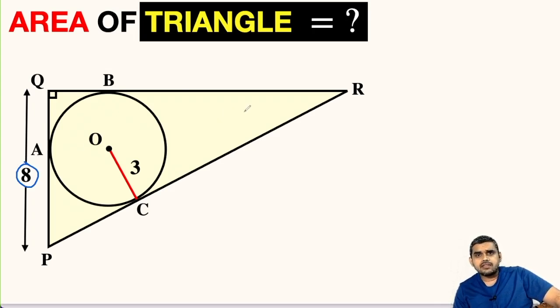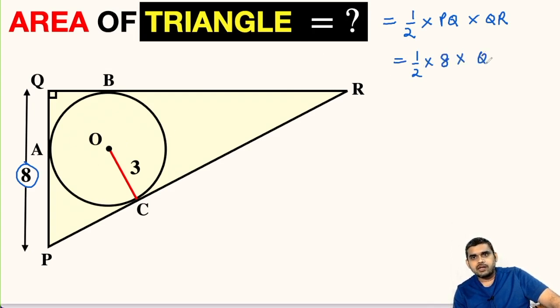Let us begin solving this question. The area of a right triangle is given by the formula half times its base times its altitude. PQ here is the base and QR is the altitude. This will be half times PQ, which is 8 units, and QR is not directly given to us. So our aim will be to find the value of QR, which in turn will give us the area of this triangle.